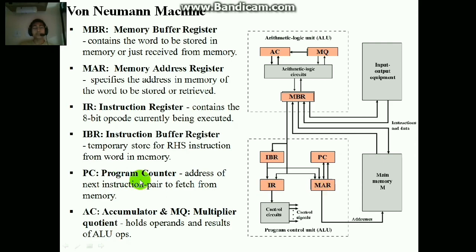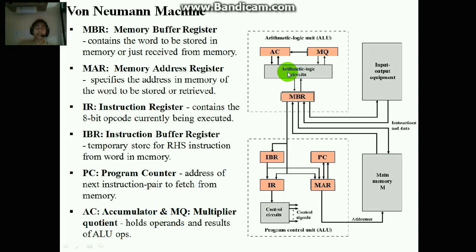The PC, of course, stores the address of the next instruction. And AC, the accumulator and multiplier quotient, holds the result given out by the ALU.